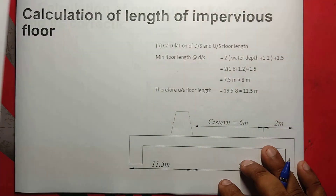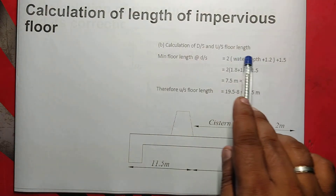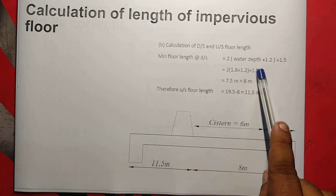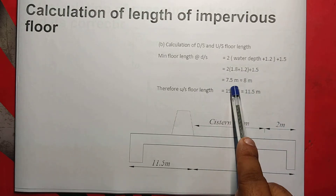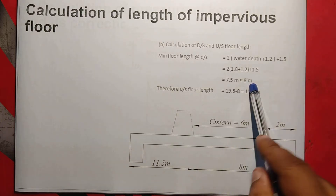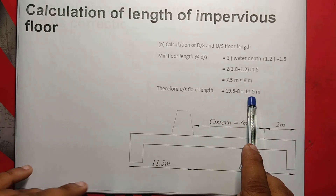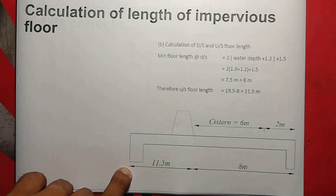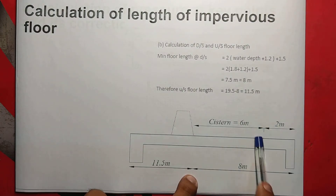This is the calculation of length of the impervious floor, equal to total length 19.5 meters. The minimum floor length at the downstream side is 2 times 2 plus 1.2 plus 1.5, where the head is 1.8, giving 1.2 plus 1.5 equal to 7.5 meters — we take 8 meters. Upstream floor length is 19.5 minus 8, which equals 11.5 meters.